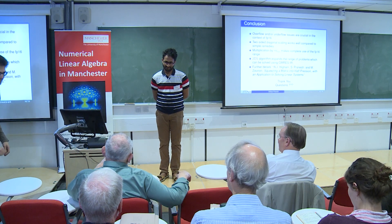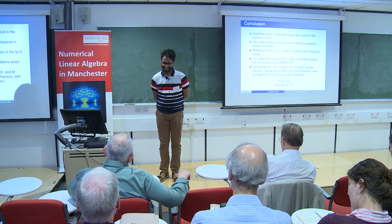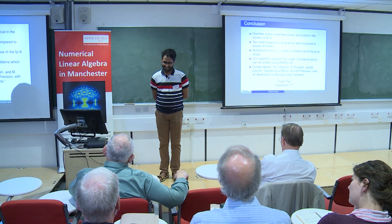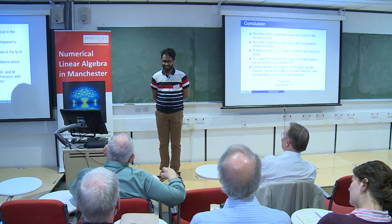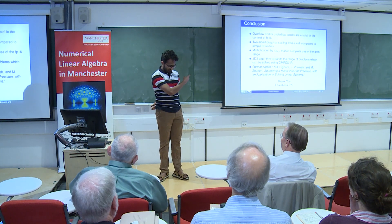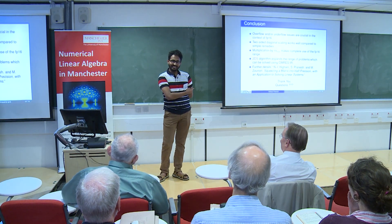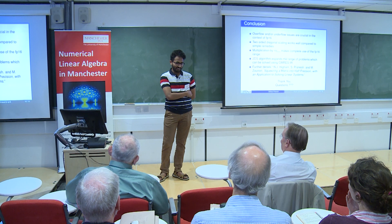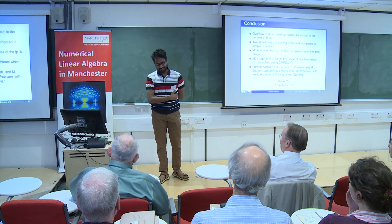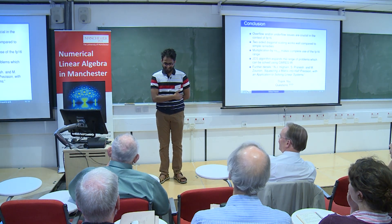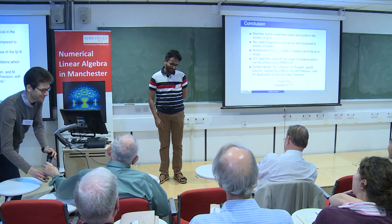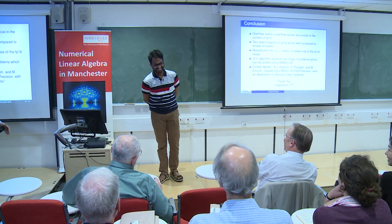An audience member asked how long it takes to do a 300×300 LU factorization using the FP16 class. With 13 matrices and an average size of around 150, it took 12 hours to complete the experiment — described as "god awful slow" — requiring the computation to run over a weekend.